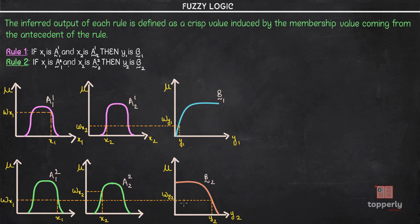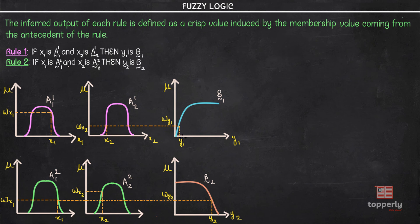As you can see here, first we found out the corresponding membership value for all the inputs for both rule 1 and rule 2, and then we found out the membership value for the output y1. This is done by using either minimum or maximum depending upon the rule. Since both rules are connected by the AND operator, we take the minimum of wx1 and wx2 for rule 1, and the minimum of wx1 and wx2 for rule 2. This is how we obtain wy1 and wy2. After obtaining wy1 and wy2, we find the corresponding crisp values y1 and y2 by extending wy1 and wy2 onto the graph.